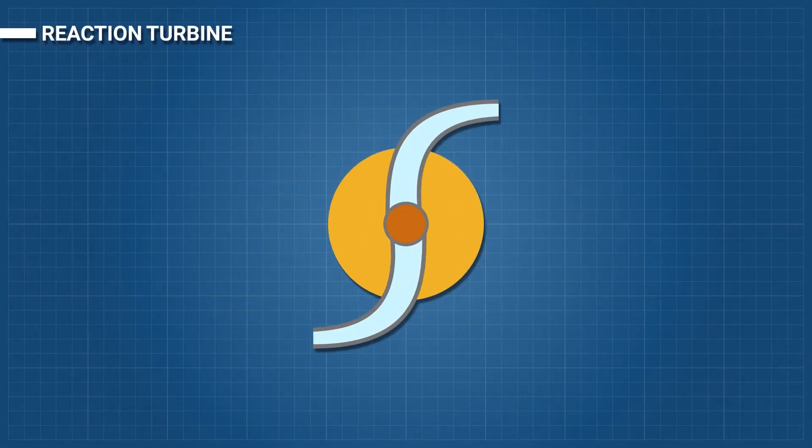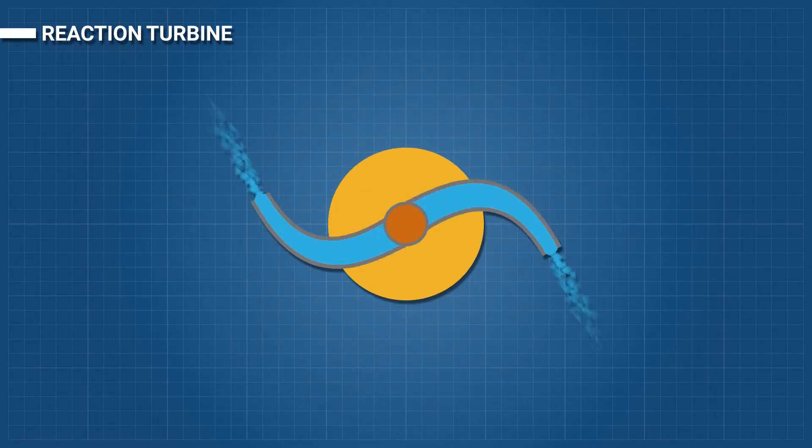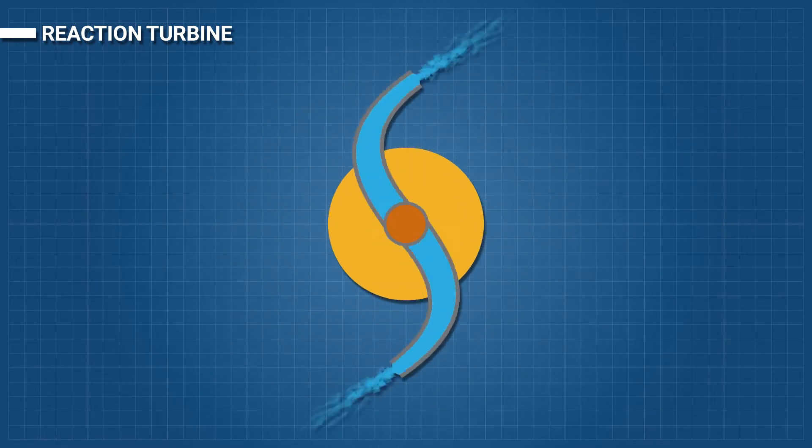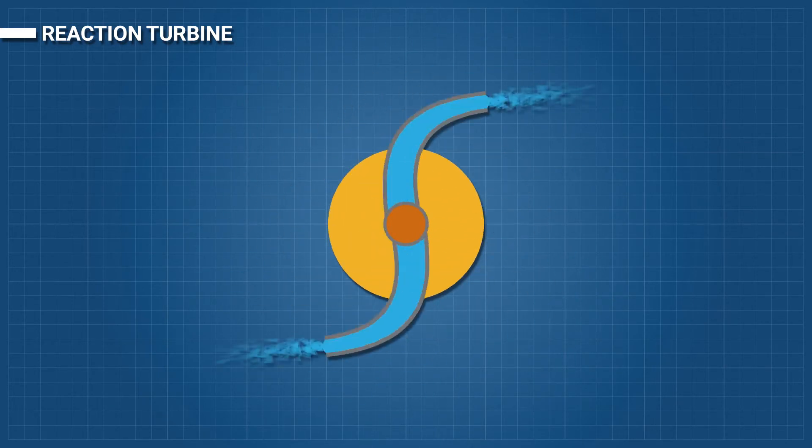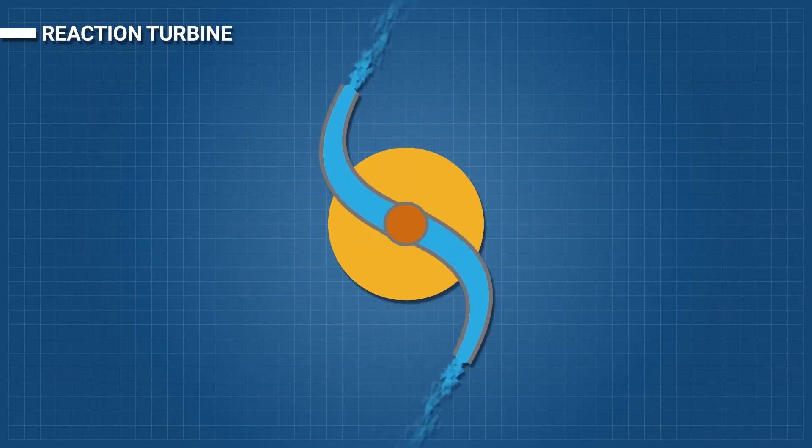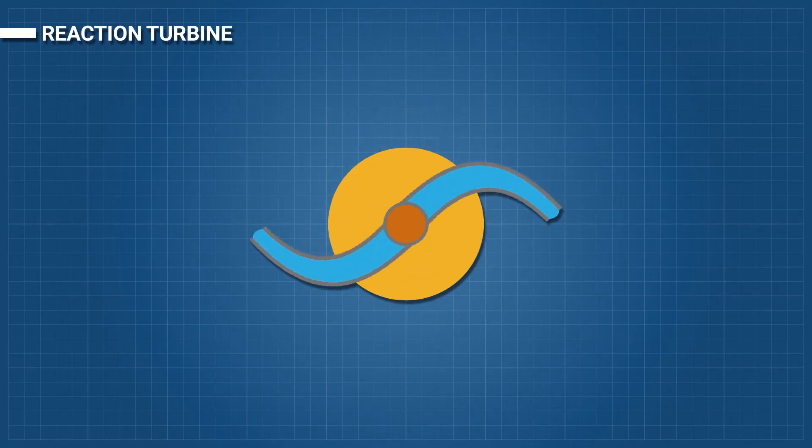Reaction turbine: A reaction turbine develops power from the combined action of pressure and moving water. The runner is placed directly in the water stream flowing over the blades rather than striking each individually. Reaction turbines are generally used for sites with lower heads and higher flows than impulse turbines.